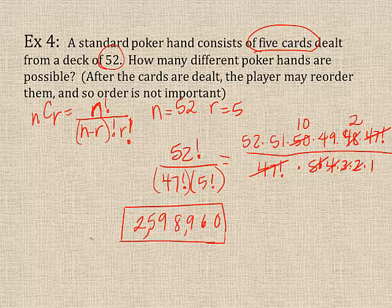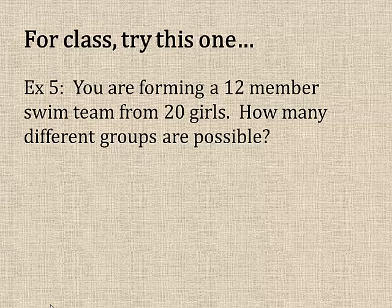All right? So, that's the way the combinations will work. All right, you try this one for class. You're forming a 12-member swim team out of 20 girls. How many different groups are possible? Try this one, and we'll see you in class.